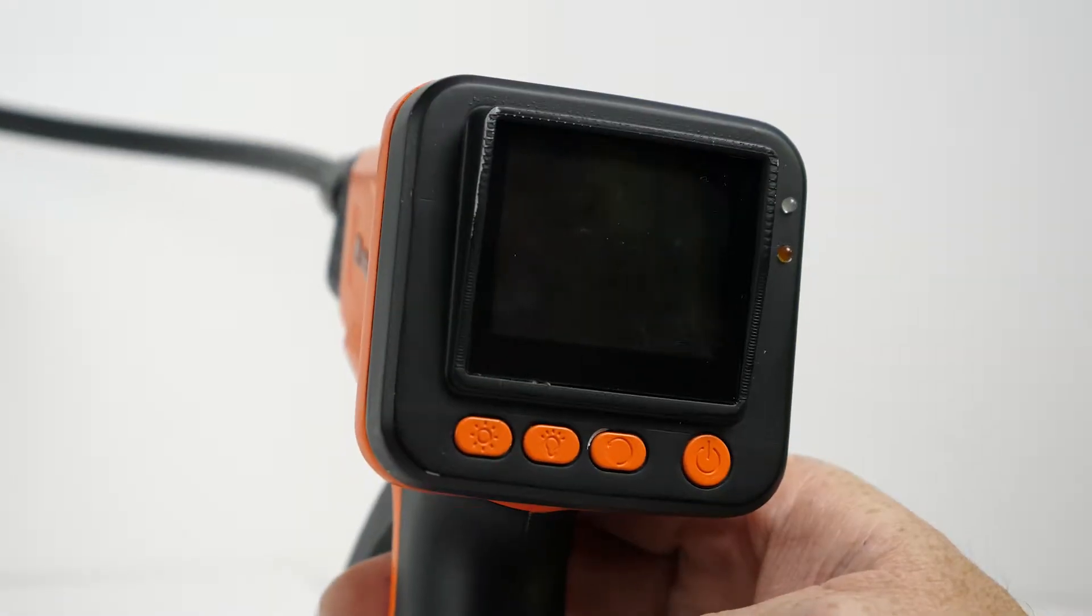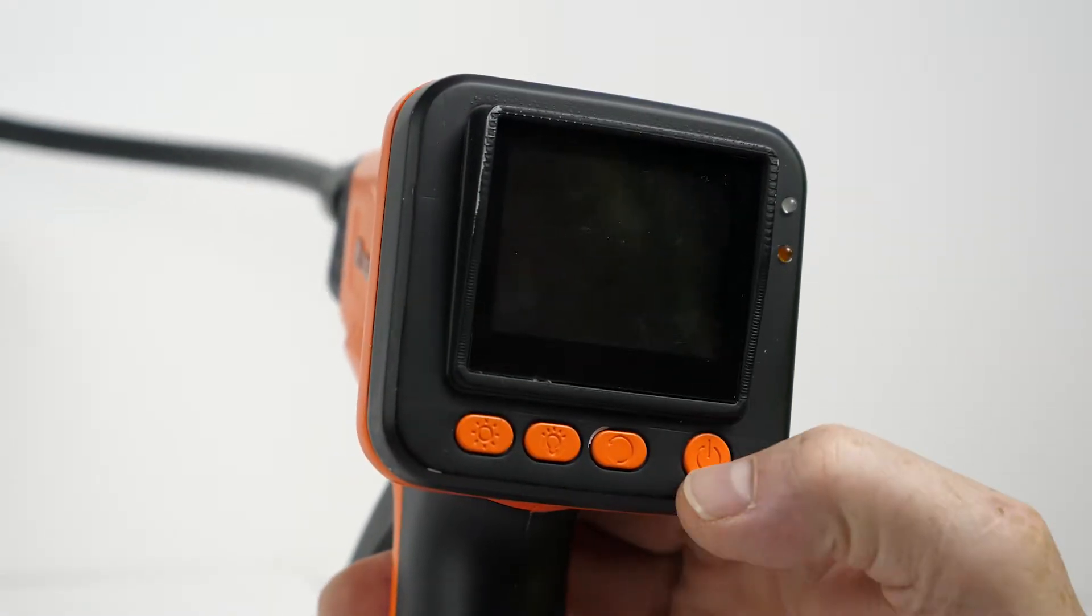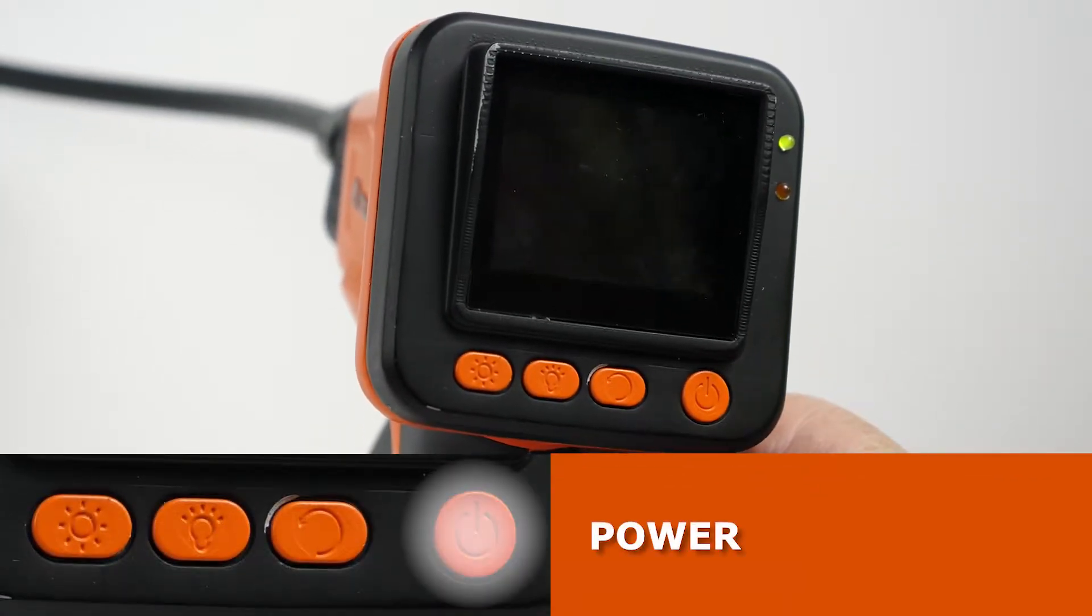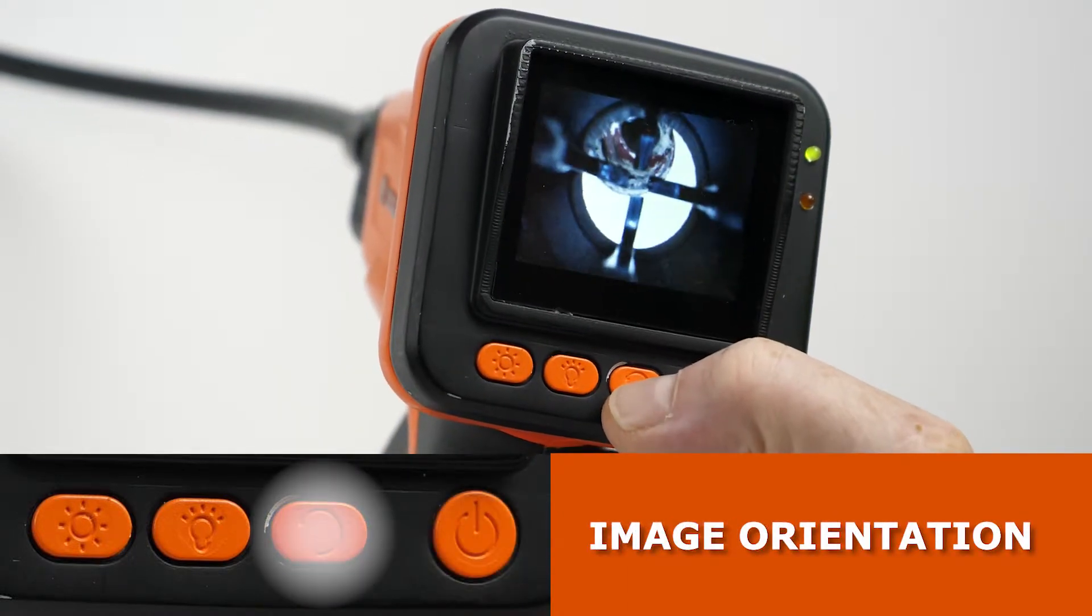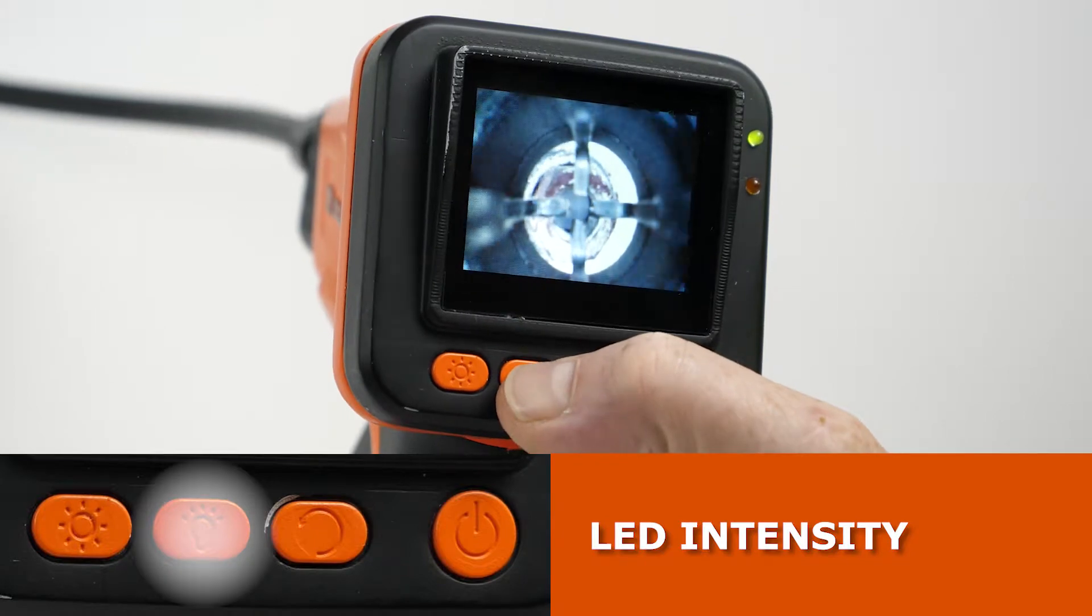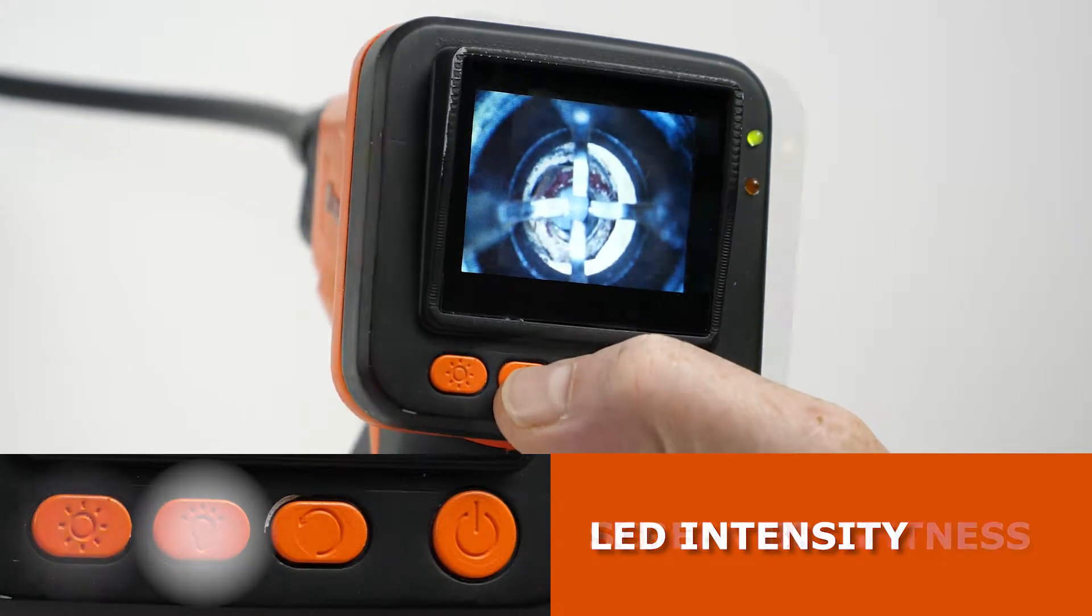The control panel features an LCD display screen and four easy-to-reach buttons: power, image orientation, LED intensity, and screen brightness.